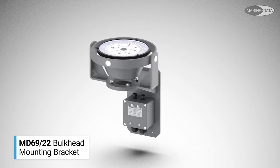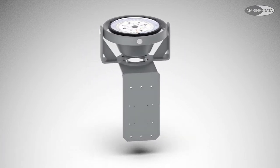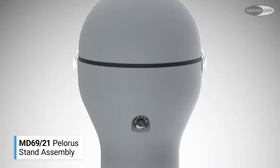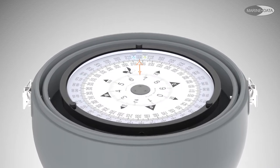However, the MD69-22 bulkhead bracket is recommended for bulkhead or gunnel mounting. The MD69-21 pylorus stand is a popular option within the bridge or outer wings.